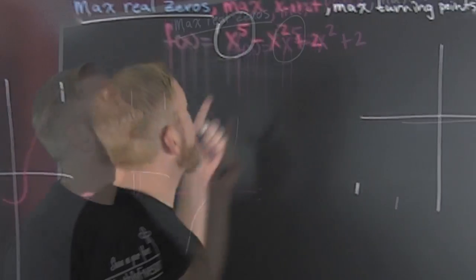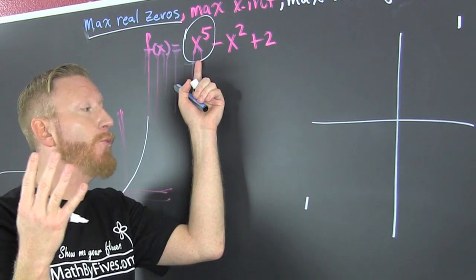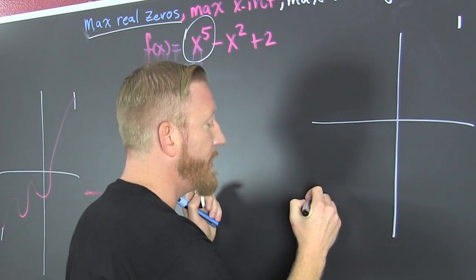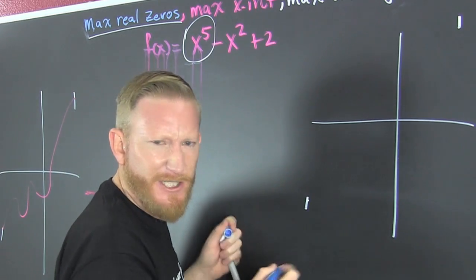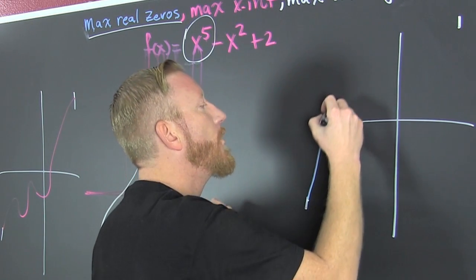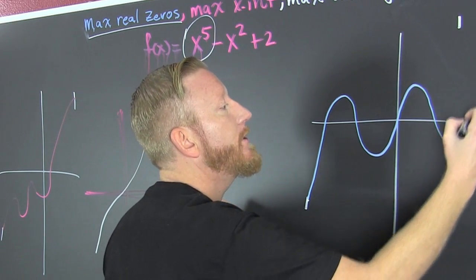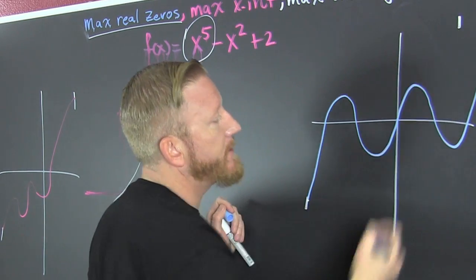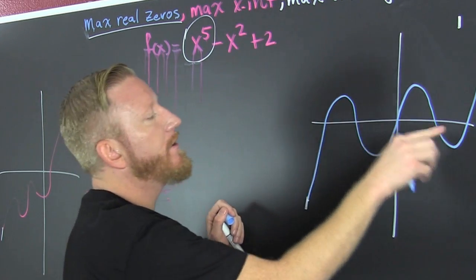What does this tell us? This x to the fifth means that it has four possible wiggle points. Let's assume that it's really aggressive: one, two, three, four, five ends up there somewhere. If it is super aggressive and wiggles all over that x-axis.